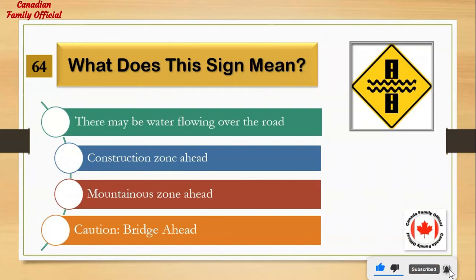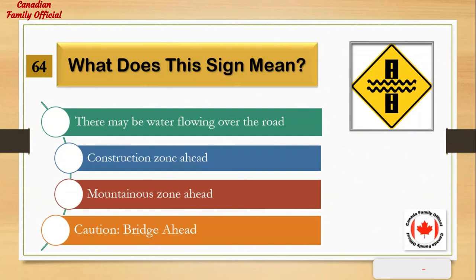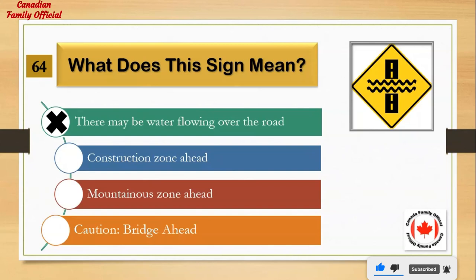What does this sign mean? Number 1: there may be water flowing over the road. Number 2: construction zone ahead. Number 3: mountainous zone ahead. Number 4: caution, bridge ahead. And the answer is: there may be water flowing over the road.